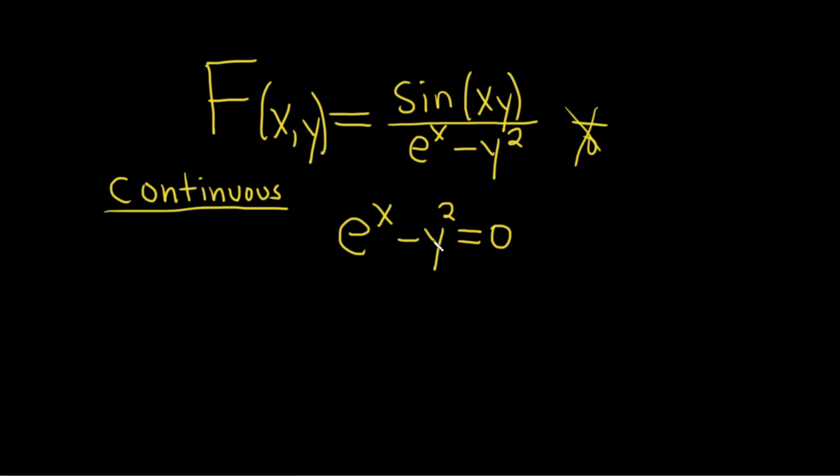So what we'll do is we'll solve this for y. So I'll add y squared to both sides plus y squared plus y squared. So we have e to the x equals y squared. I'm going to go ahead and write it backwards and come over here and write it as y squared equals e to the x.